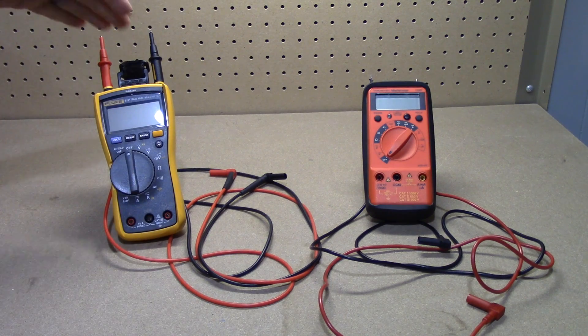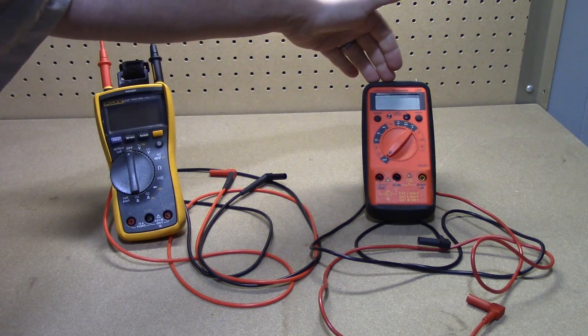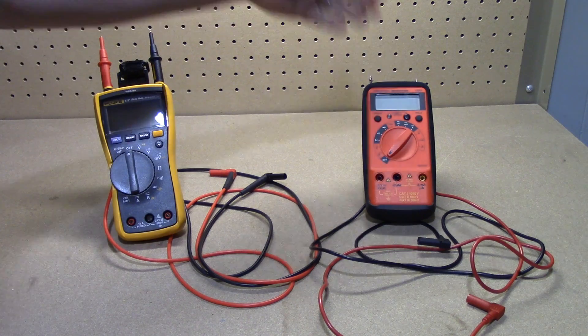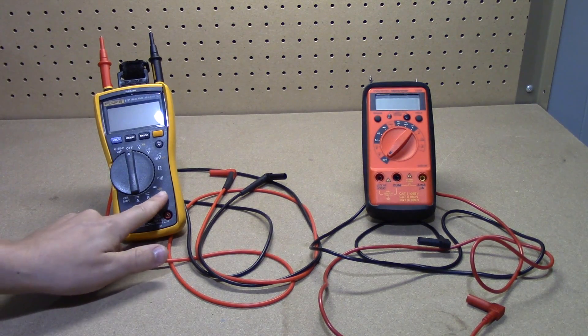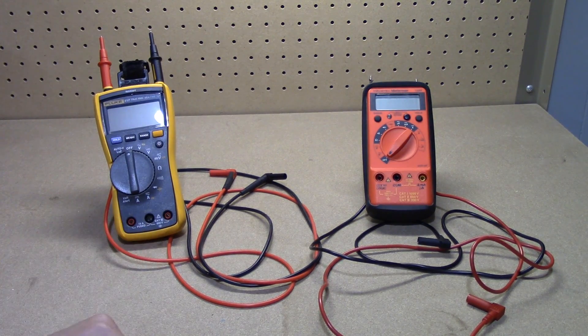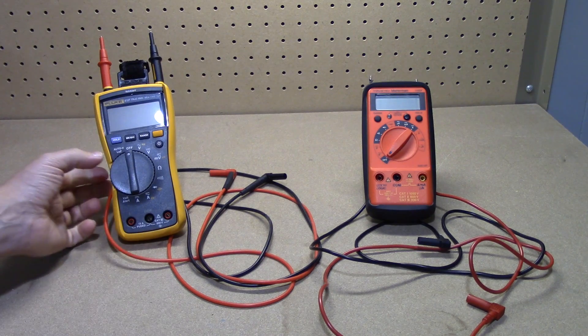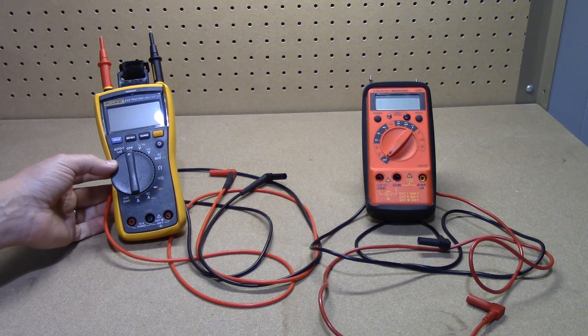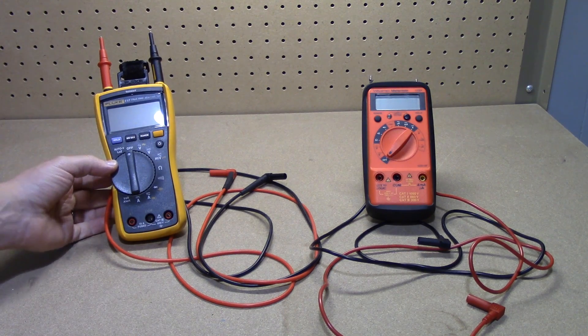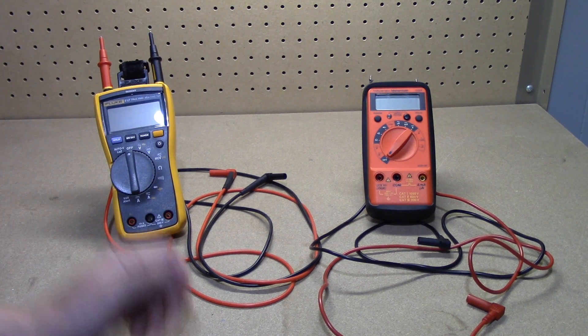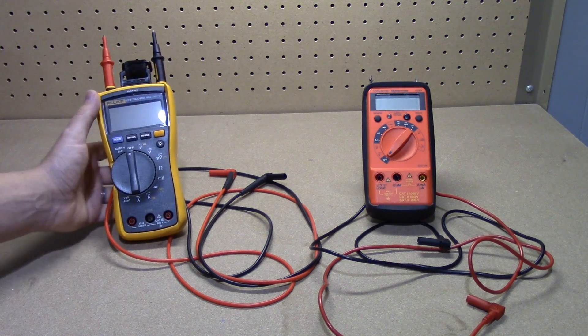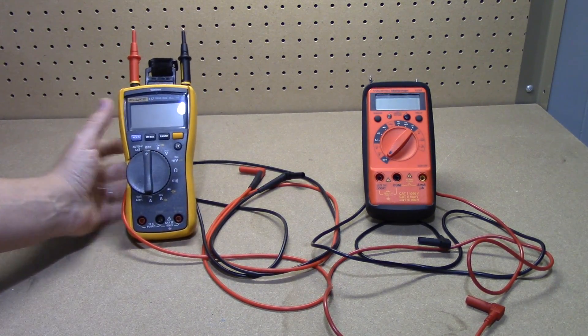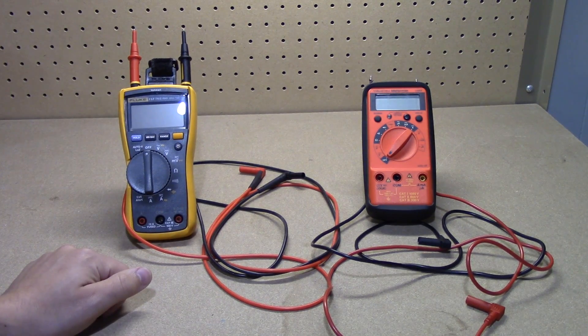The extra feature you get on the Fluke versus the Meterman in this case is you can measure capacitance with this meter. It does have another feature with Auto V Low Z. I'm not actually sure what that is. I've never used it all the years I've had this one, and as you can tell by how nice both of these look, they mostly just live in a drawer and I break them out as needed.